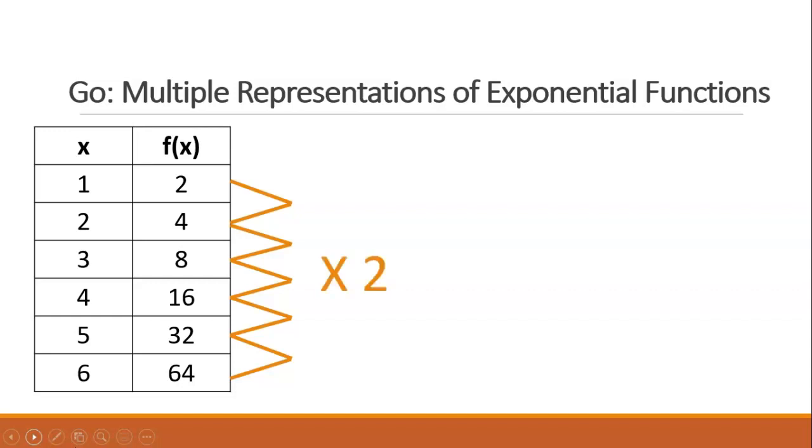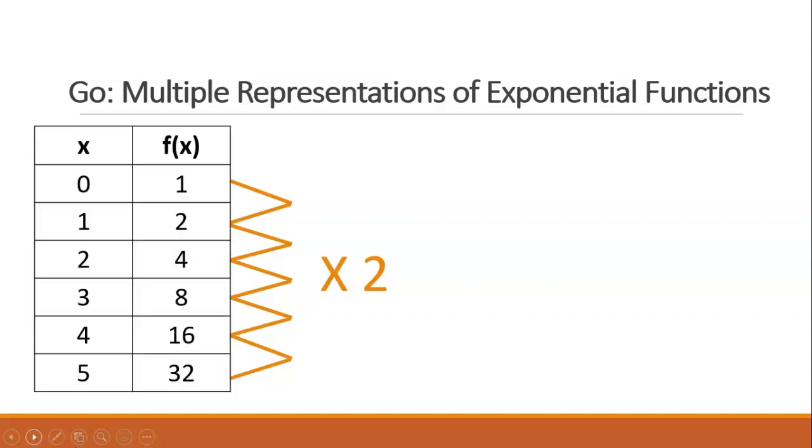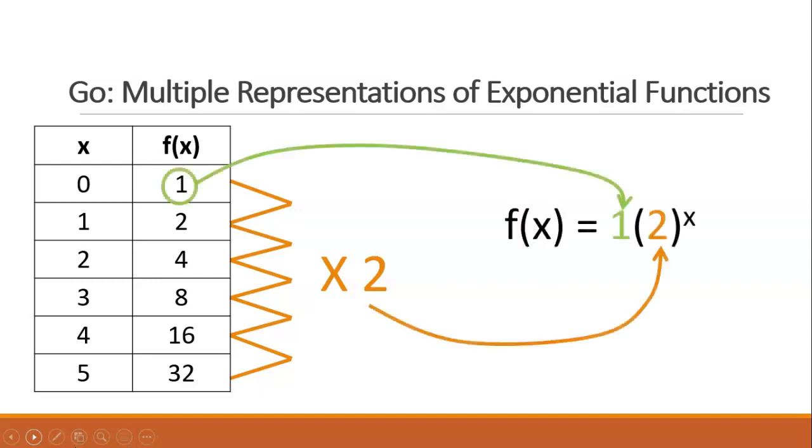To find c, you need the y-intercept, or where x is equal to 0. You can work the pattern backwards to find it once you know what the common ratio is. Then you have what you need to write the equation.